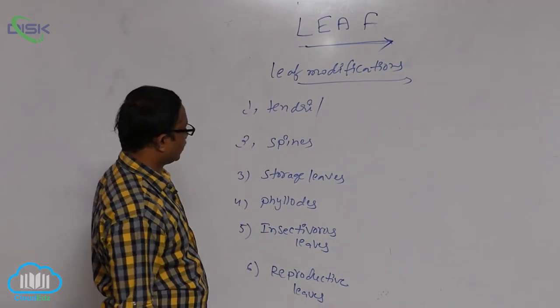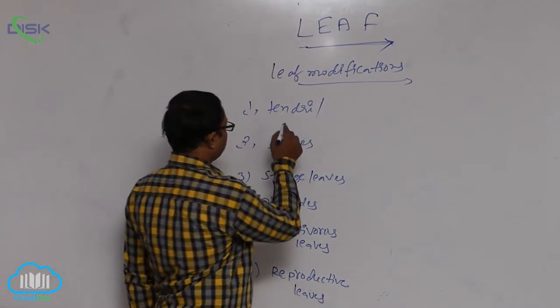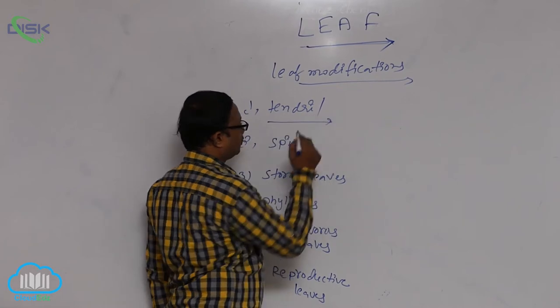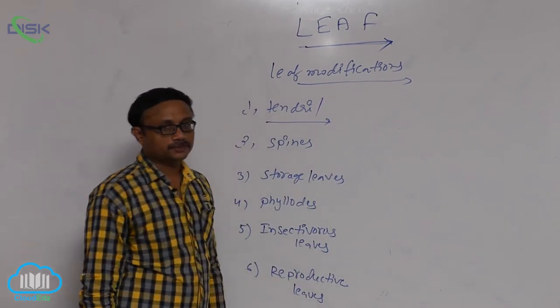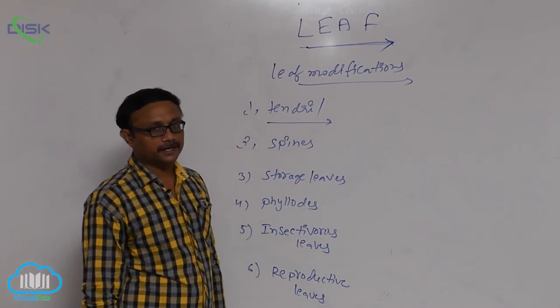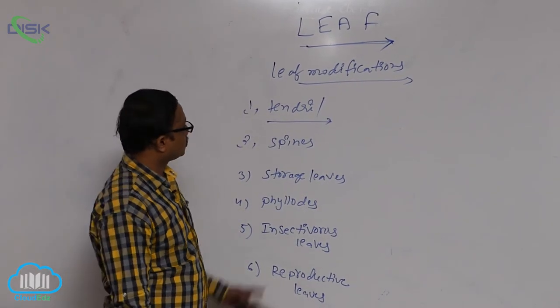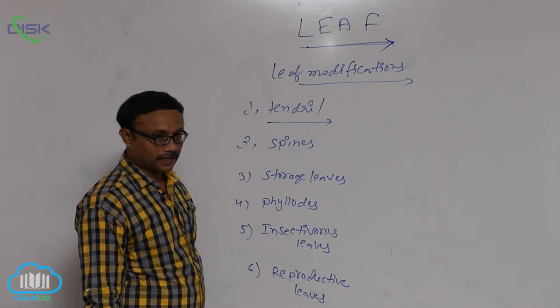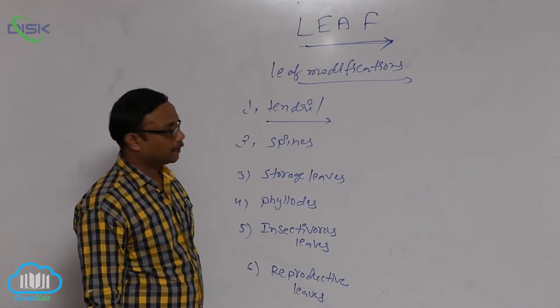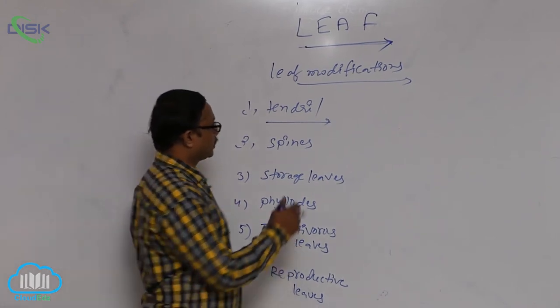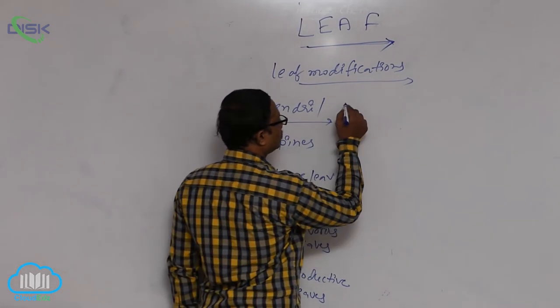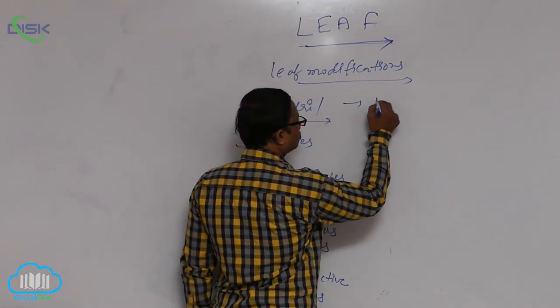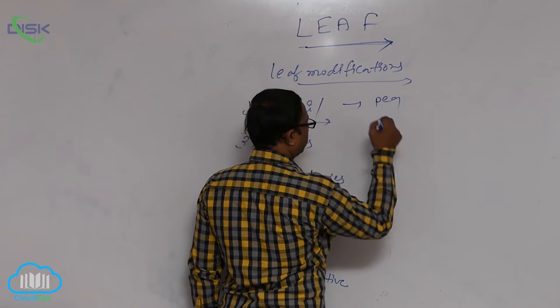First one is the tendril. Tendril means small, delicate, sensitive structures. They are used for climbing purpose of the plant. That is known as a tendril. Example: pea plant.